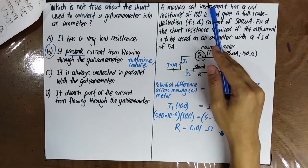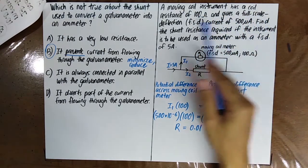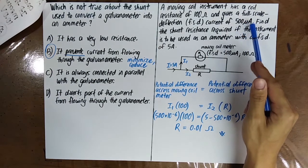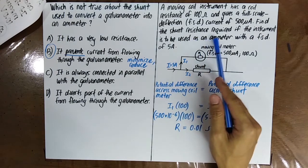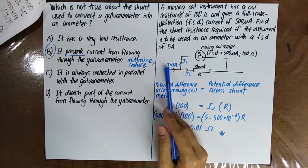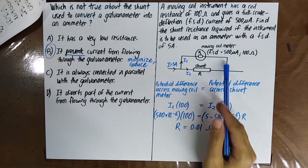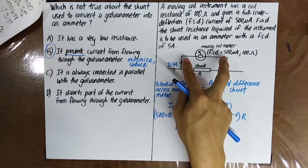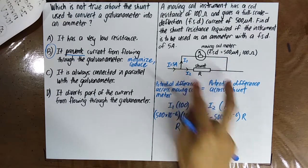A moving coil instrument has a coil resistance of 100 ohm and gives a full-scale deflection (FSD) current of 500 microampere. Find the shunt resistance required if the instrument is to be used as an ammeter with a full-scale deflection of 5 A. The total current is 5 A, so you have to use a shunt connected in parallel with the meter. Since they are connected in parallel, the potential difference across the meter is the same as across the shunt.